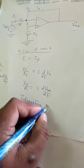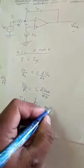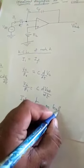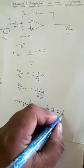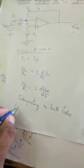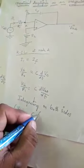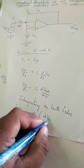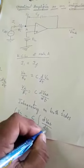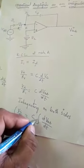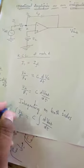Integrating on both sides, we get integration of V in by R equals C into integration of dV out by dT. The differentiation and integration cancel, and we are left with this part.